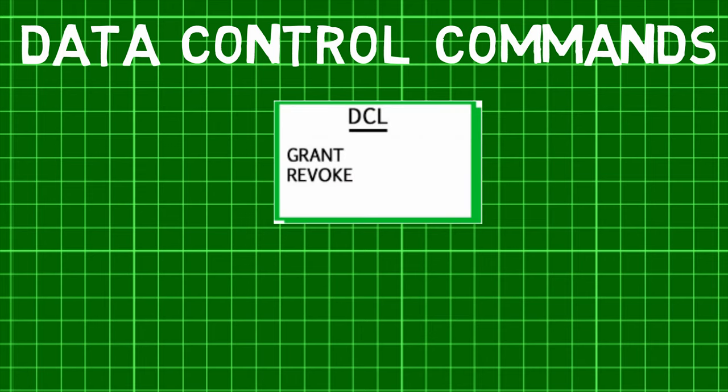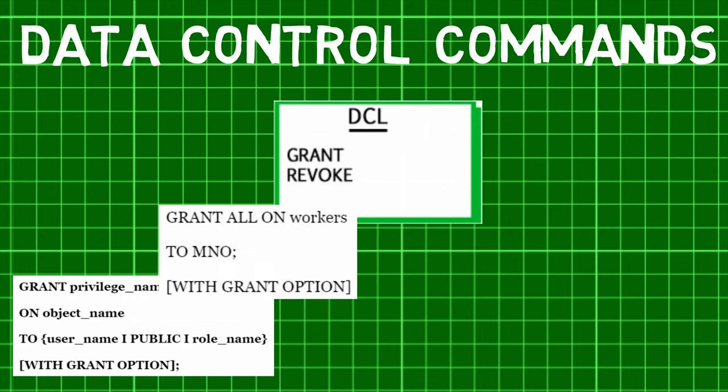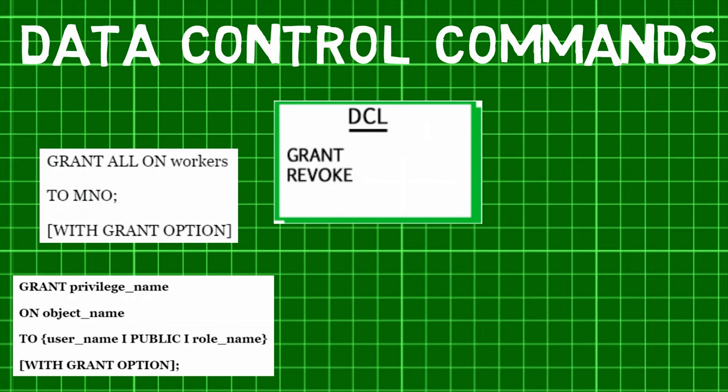There are two types of commands in a data control language. First is the GRANT command. It is used for offering access or privileges to users on objects of the database. Through this command, users get access to privileges in the database. The general syntax for the GRANT command contains a privilege name, object name, and user name.